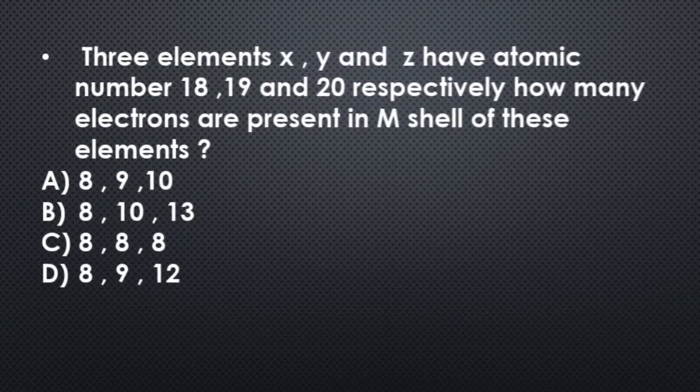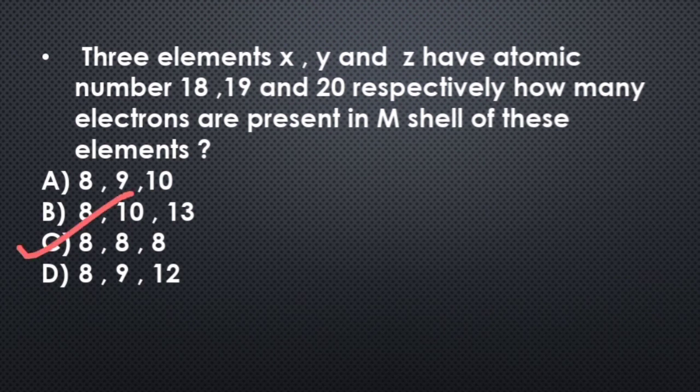So the next question: 3 elements X, Y and Z have atomic number 18, 19 and 20 respectively. How many electrons are present in M shell of these elements? Options: 8, 9 and 10; 8, 10, 13; 8, 8, 8; and 8, 9, 12. Its correct answer is option C, 8, 8 and 8.